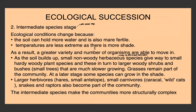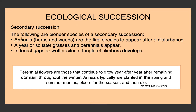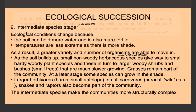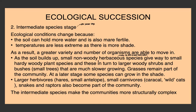After the pioneer species stage — whether primary or secondary — we move on to the intermediate species stage. Ecological conditions change because the soil can now hold more water and is more fertile. Temperatures are less extreme because there's more shade from plants that have grown in. Because of this, there's a greater variety and number of organisms that can move in. As the soil builds up, non-woody herbaceous species give way to small hardy woody plant species, which in turn give way to larger woody shrubs and bushes that are more slow-growing. The grasses will remain part of the community throughout all the stages.